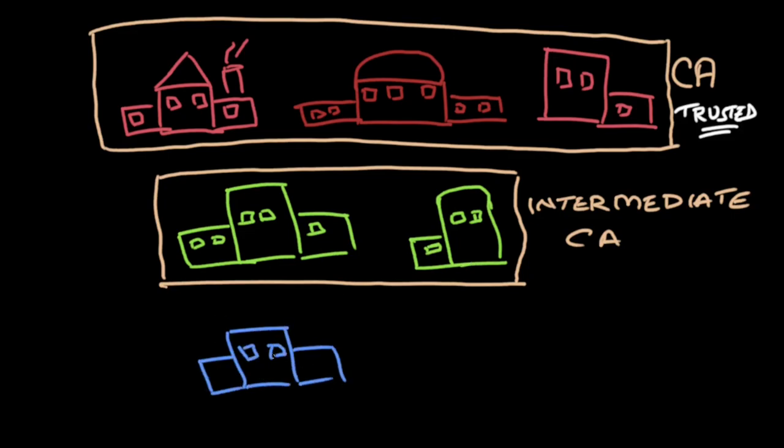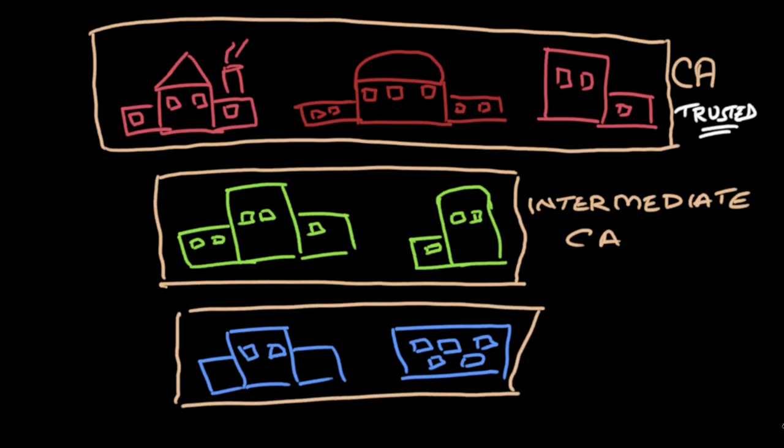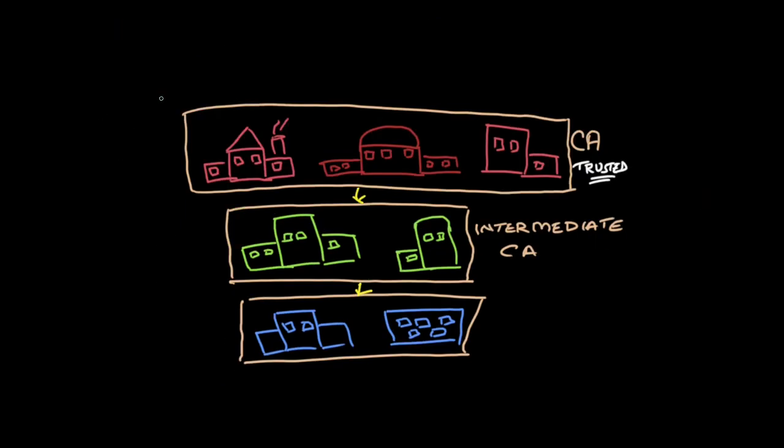As long as the bottom most authority can show a clear connection to the root CA, the certificate is still trusted. This connection to the topmost CA or the root CA is called the chain of trust.